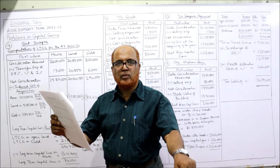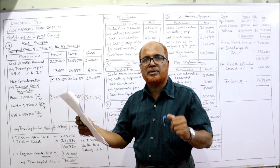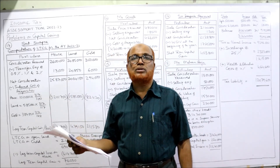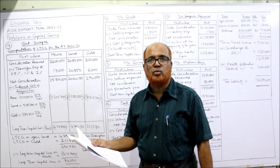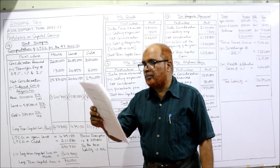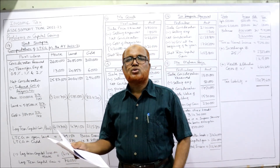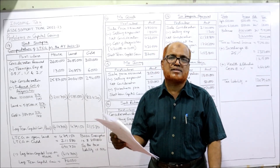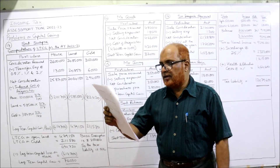The house is sold during the current previous year 2021-22, so it's a long-term capital asset giving long-term capital gain. Open land in the city was purchased on 1st May 2005 and is now sold in 2021-22 — again long-term. Gold was purchased on 4th May 2009 and again sold during the current year. When all assets are held for more than three years, the gain arising will be long-term capital gain.